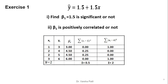Now let us start with the exercise. In this exercise there are four total records. X is the independent variable, Y is the dependent variable, and the four records are: (1,3), (2,4), (2,5), (3,6). From linear regression we found the equation Y = 1.5 + 1.5x, where the first 1.5 is the intercept and the second 1.5 is the slope. Two questions are: first, find whether beta 1 is significant or not, and second, whether beta 1 is positively correlated or not.